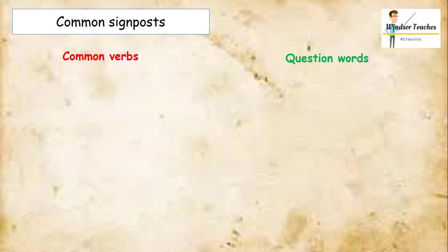Key common signposts for indirect questions are going to be some common verbs that you might see in such a construction, and also some key and important question words. Key things you need to look out for are, of course, the main verb being some sort of verb of asking, or wondering, or thinking, question words as well, and those two combined with the fact the second verb is a subjunctive is going to point you very firmly to the idea that it is an indirect question.